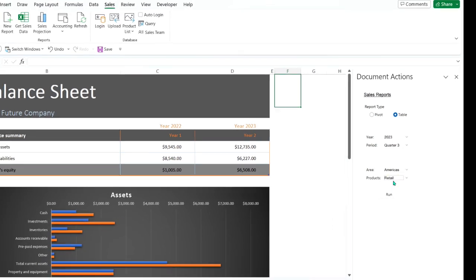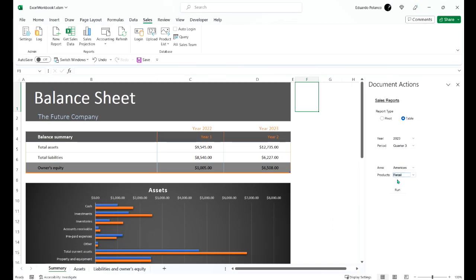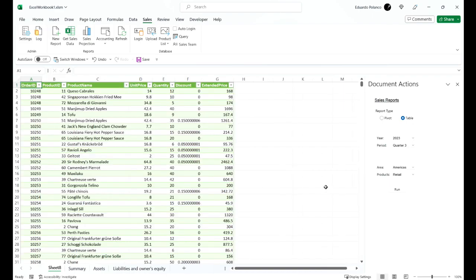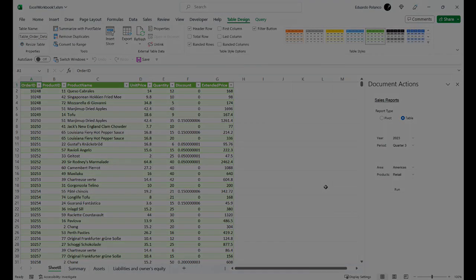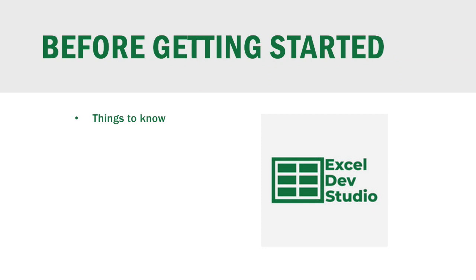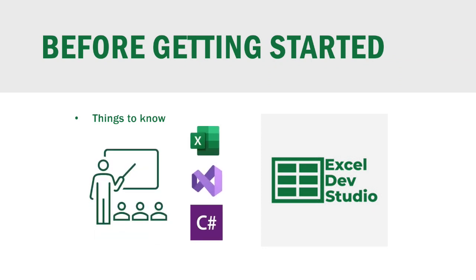If you want to customize the ribbon or add a new task pane with functionality, then we can use VSTO. We can make Excel do so much more with VSTO. This course requires that you are familiar with Microsoft Excel, Visual Studio, and have intermediate programming skills in C#.